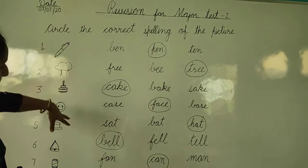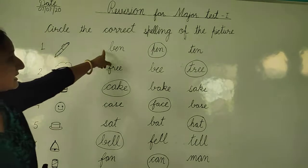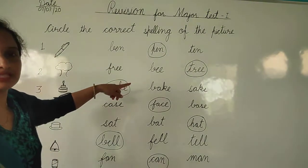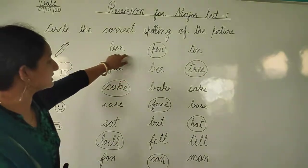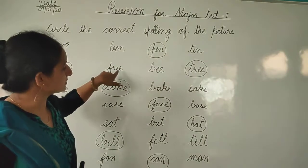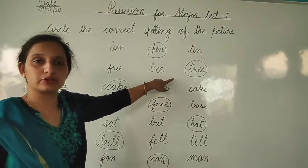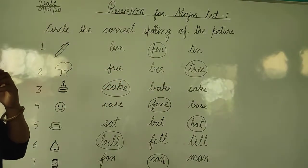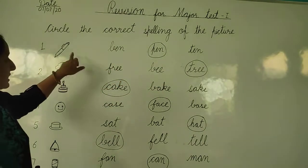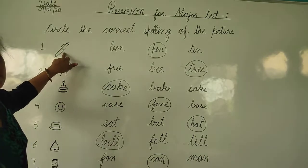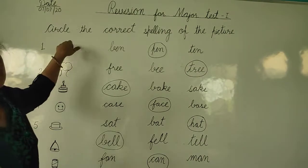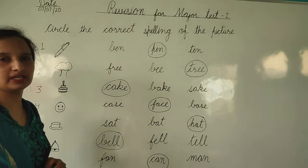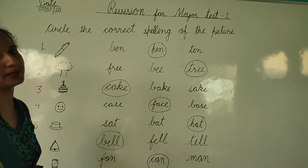Okay students, like this you have to complete your English work. First draw the picture and write the spellings, then read the words carefully, and after that circle the spelling of the picture. Okay, bye bye. Good luck.